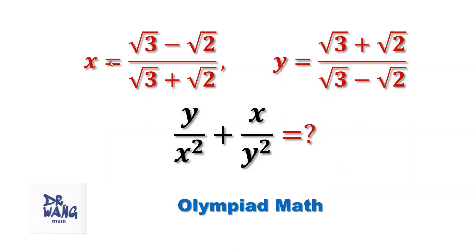If x equals square root of 3 minus square root of 2 divided by square root of 3 plus square root of 2, y equals square root of 3 plus square root of 2 divided by square root of 3 minus square root of 2, what is the value of y over x squared plus x over y squared?